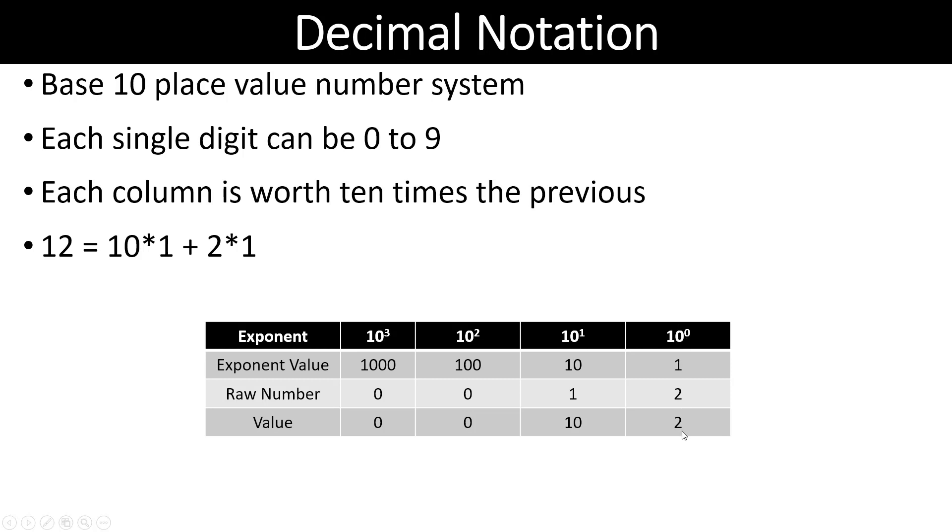So 10 to the 0 is the 1's placeholder, 10 to the 1 is the 10's, 10 to the 2 is the 100's, and 10 to the 3 is the 1,000's. When we put 12 in here, we calculate that we have one 10 and two 1's. So 10 plus 2 equals 12, and that's how we come to decimal notation.